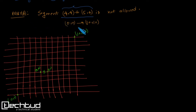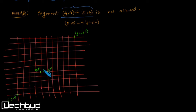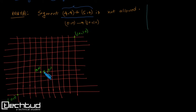In part two we again find all distinct paths from 0,0 to 10,10 but with one constraint: we are not allowed to use the segment from 4,4 to 5,4. In part one we calculated all paths as 20C10 with no constraint. Now we subtract all paths that contain this forbidden segment.